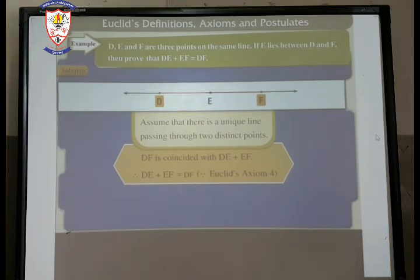Now, let's move to the example. D, E and F are the three points on the same line as it is visible through the diagram. If E lies between D and F, then prove that DE plus EF is equal to DF. Assume that there is a unique line passing through two distinct points. We have proved earlier also. So DF is coincided with DE plus EF. By Euclid's axiom 4, we can say that DE plus EF is equal to DF.